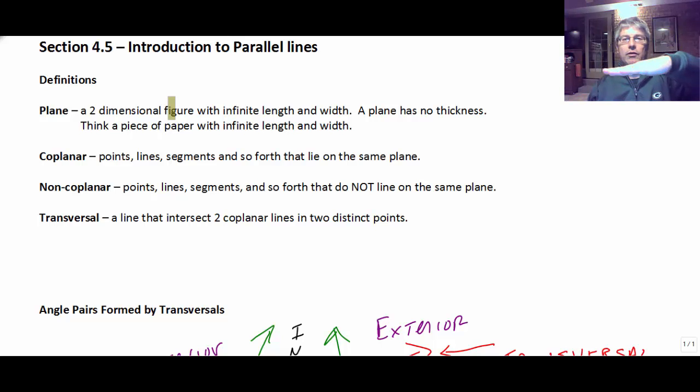So if we had a plane that was kind of like this, and we had a line that came through it, that line and that plane would not be coplanar, whereas if that line is on the plane, then it is coplanar.